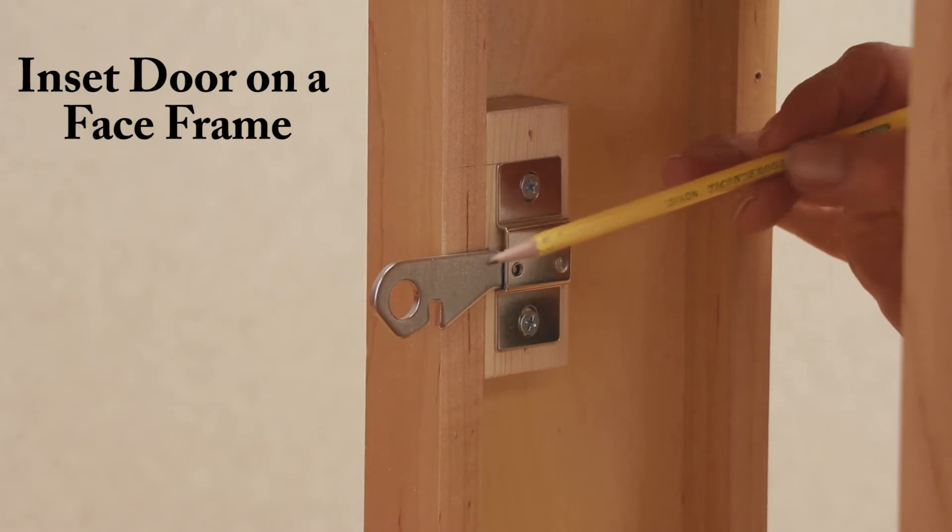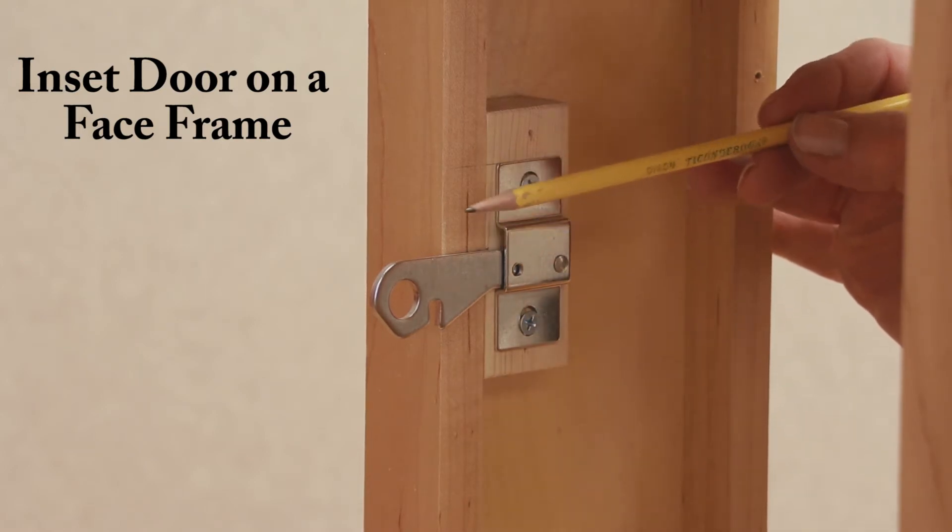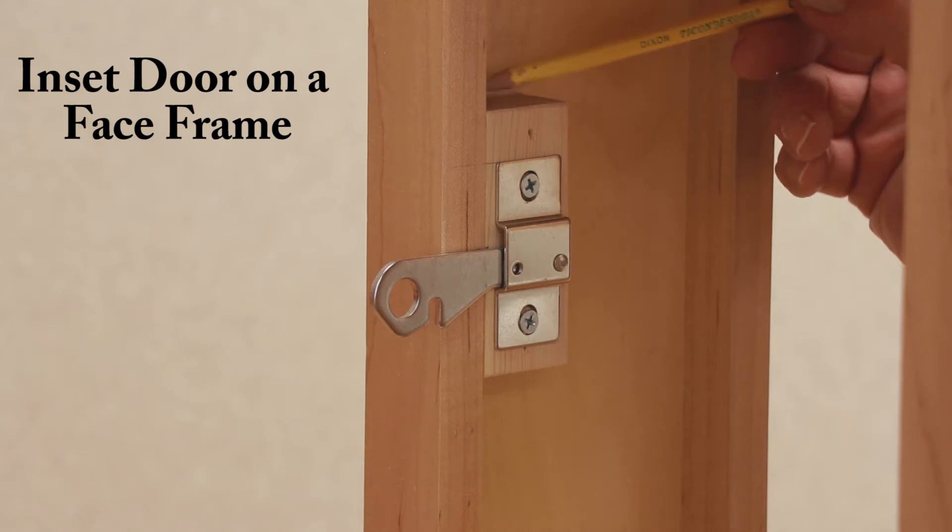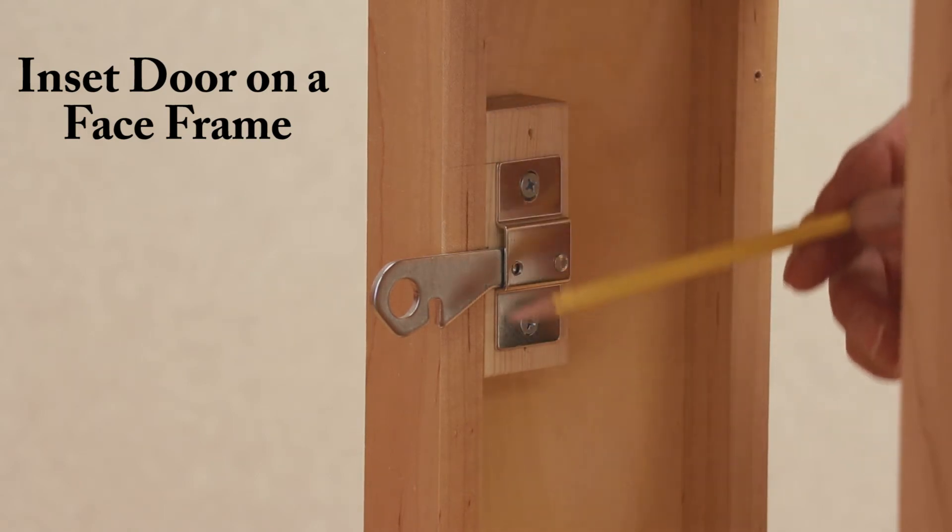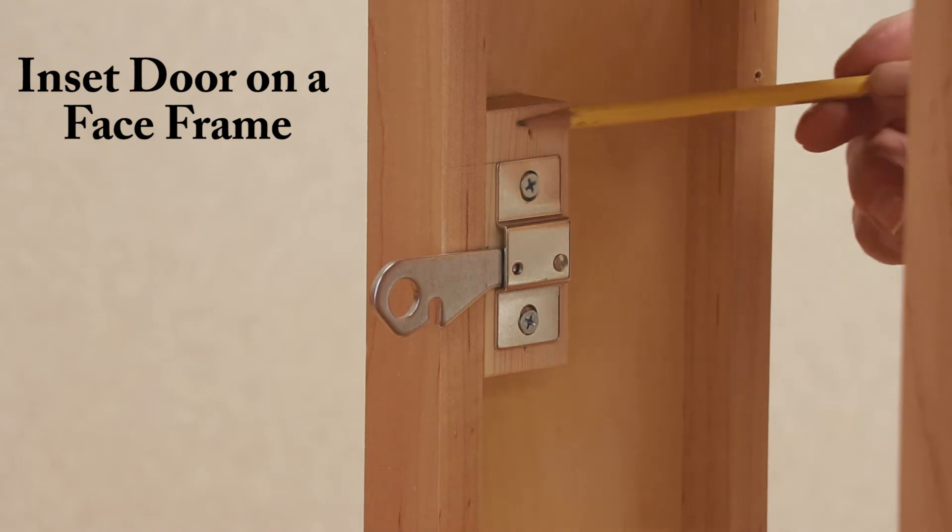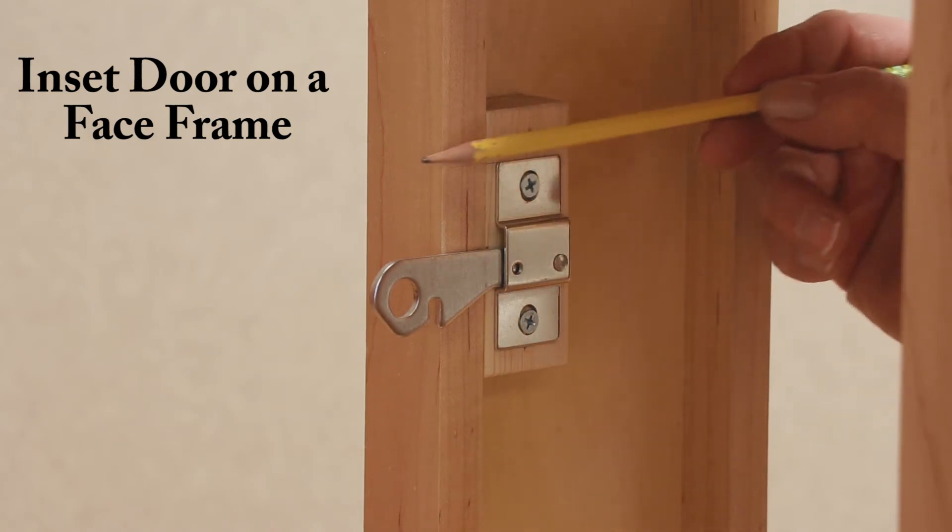In order to make the latch function properly in a face frame cabinet, it works best to block out behind the face frame. So that's what you see right here, is a block of wood that's machined so it fits perfectly behind the face frame.